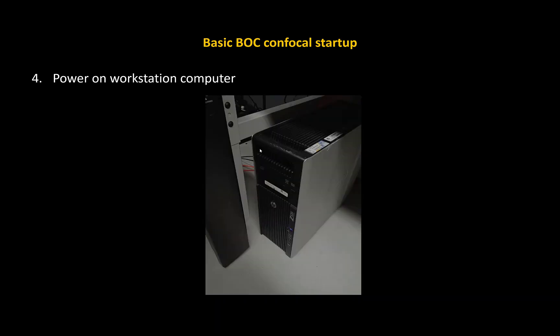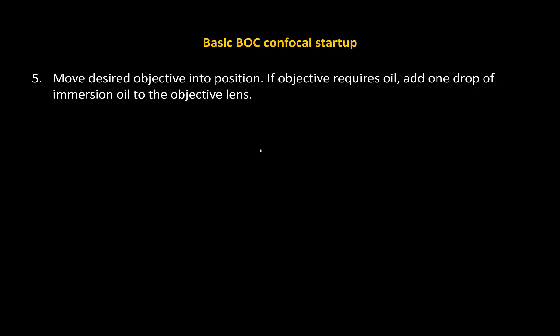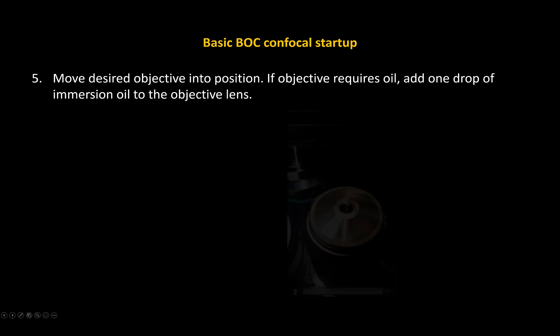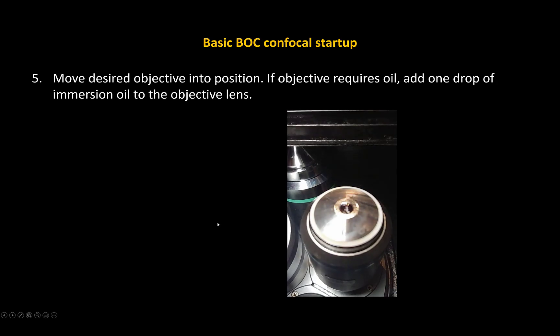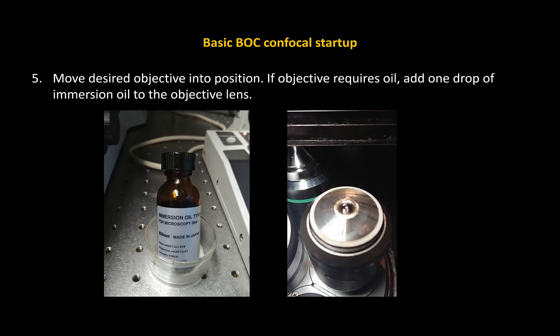The fourth step is to power on the workstation computer — pretty self-explanatory. Next, move the desired objective into position. If an objective requires oil, add a drop of immersion oil to the objective lens. For anything below 40x magnification, it will be an air objective and you will not need oil or water — this includes 20x and below. Here's a quick video of adding a single drop of oil to the objective lens. You can see I'm gathering the oil and adding just one drop. If oil seeps down the sides of the objective, wipe it off with lens tissue paper before proceeding.